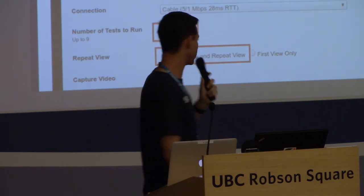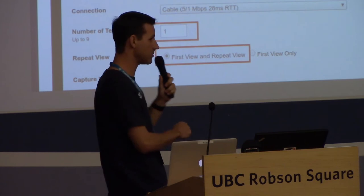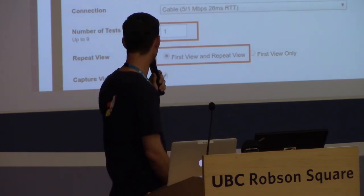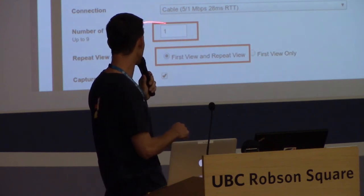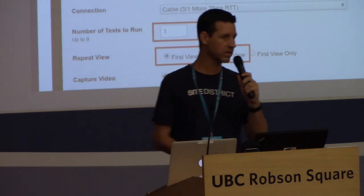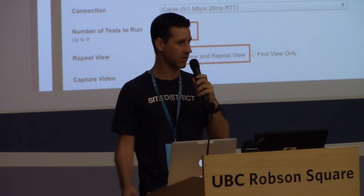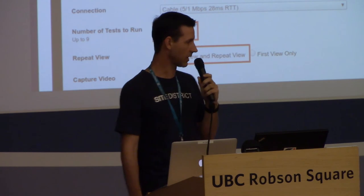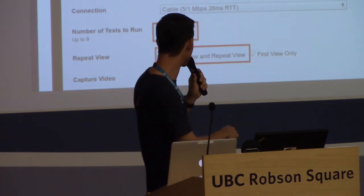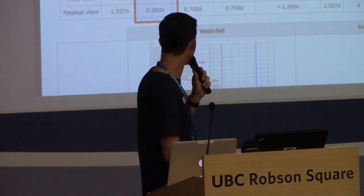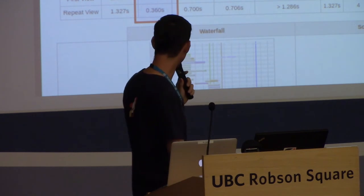One of my favorite tools is WebPageTest.org — it's free and gives a lot of good information. Select a test location that matches where most of your visitors are coming from. In the advanced options, I change the number of test runs from three down to one, but I check Repeat View — this runs the test twice: once as a brand new visitor and once as a returning visitor with browser cache. I also make sure Capture Video is checked, which enables the Film Strip view. Put in your URL, click test, wait — you might be queued — and then results come back.